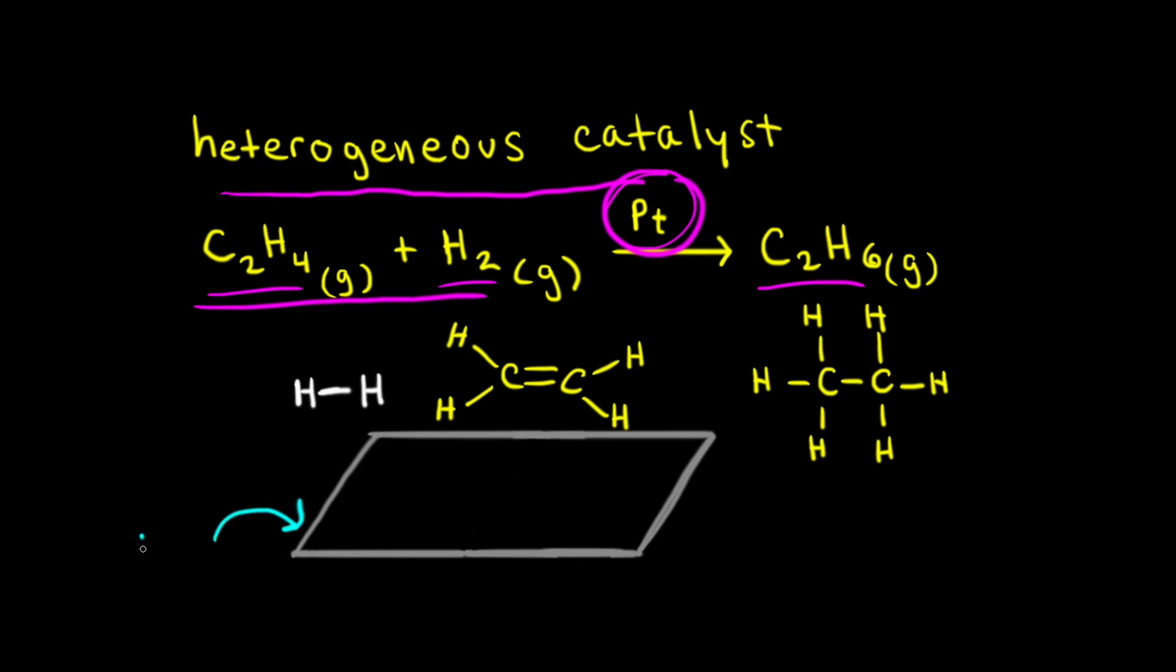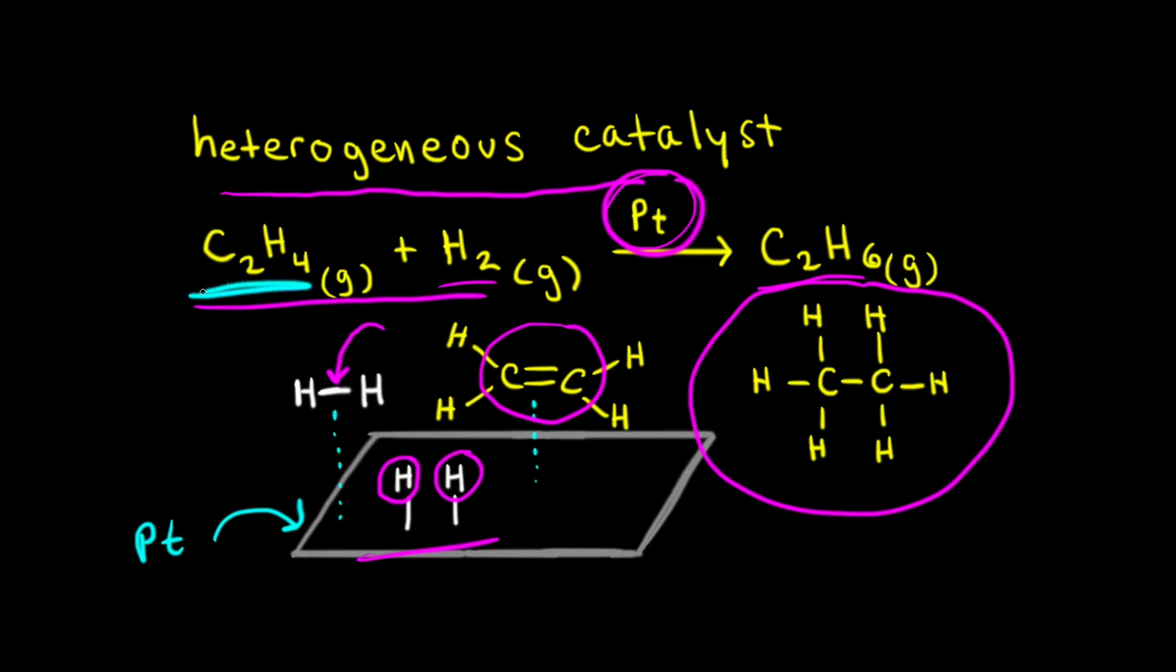So here in our picture, we have our piece of platinum metal and both the ethene molecule and hydrogen are adsorbed to the surface of the platinum metal. Next, the bond between the two hydrogen atoms breaks and we get the two individual hydrogen atoms bonded to the surface of the platinum metal. Eventually, these two hydrogens add across the double bond of ethene and form the ethane molecule, C2H6. So the hydrogenation of ethene to form ethane is catalyzed by the presence of the platinum metal.